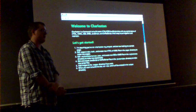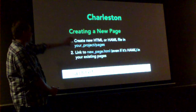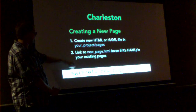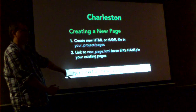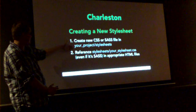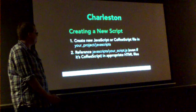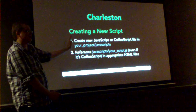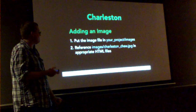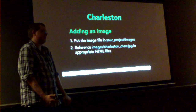I'll link to the source code if you want to help make it better. To create a new Charleston page, just create a new file in the pages directory, either HTML or Haml, and link to it as an HTML file from existing pages. For a new stylesheet, put it in the stylesheets directory and link to it as a .css file even if it's Sass. For a new script, put it in the JavaScript directory and call it yourfile.js. For images, there's an image directory and you refer to it as-is — I don't have any image generation yet.